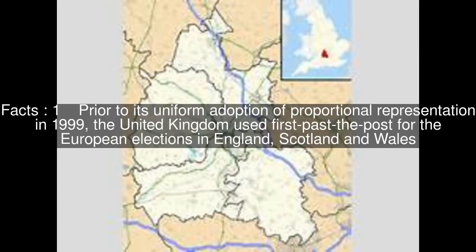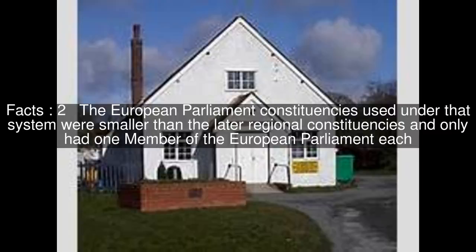Prior to its uniform adoption of proportional representation in 1999, the United Kingdom used first past the post for the European elections in England, Scotland and Wales. The European Parliament constituencies used under that system were smaller than the later regional constituencies and only had one member of the European Parliament each.